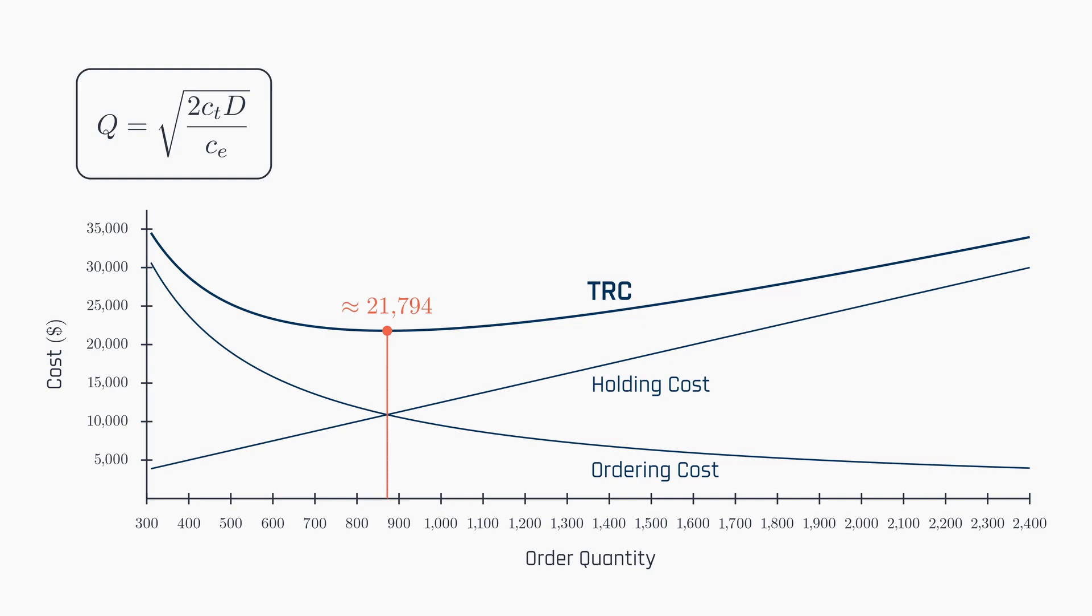Now, what if we opted to place orders twice a month? So, let's say every 15 days. This approach would lead to order sizes of 411 units, and consequently, the total relevant cost would escalate to $28,252, marking an increase of nearly 30%.